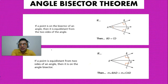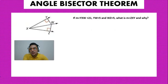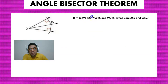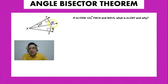Now we're going to use this knowledge from the angle bisector theorem to solve a problem. In this problem, the measurement of angle YXW is 21 degrees — that angle right here is 21 degrees. We know that the distance from Y to Z is 5 and the distance from Y to W is also 5.